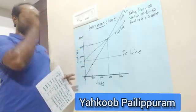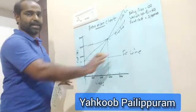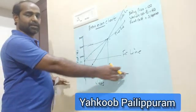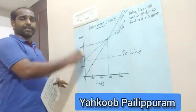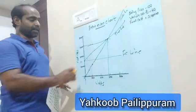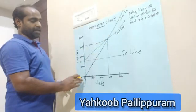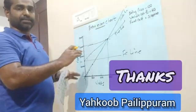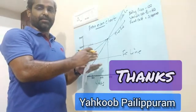To summarize: on the break-even chart, the X-axis represents units and the Y-axis represents costs and sales in rupees. We draw three lines — the fixed cost line, the total cost line, and the sales line. The intersection of the total cost line and the sales line gives us the break-even point.